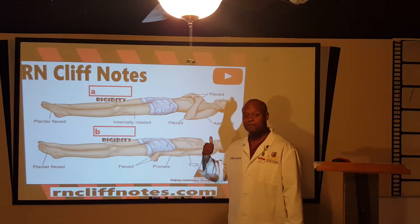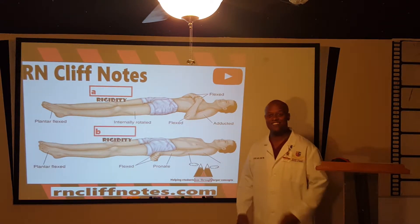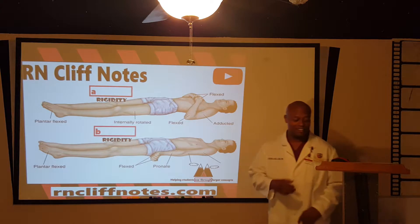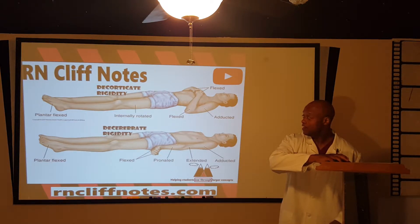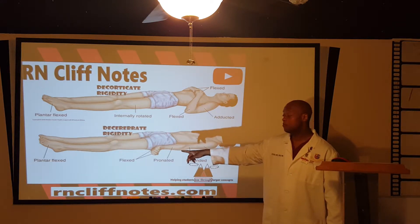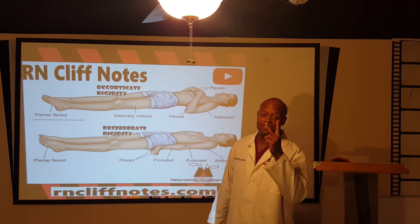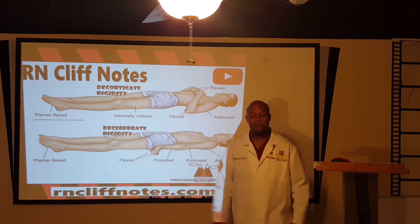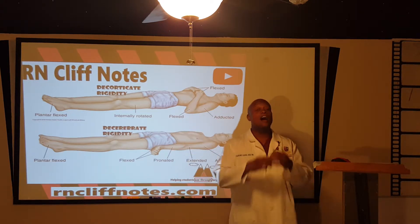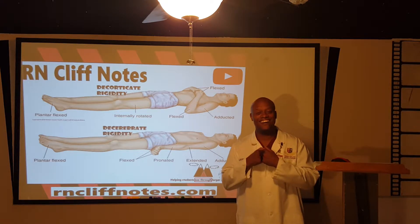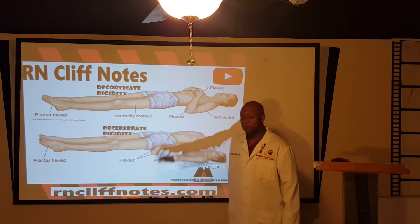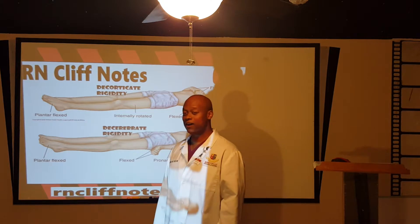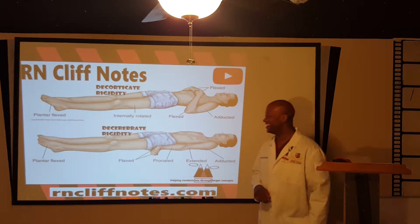Quiz time — name that rigidity. Pause the video if you need to. Decorticate would be A, and decerebrate would be B. Two ways to learn that: for decorticate, we think of 'court' — what position would you be in in court? 'Please your honor, I'll never do it again' — hands like that, flexed up. For decerebrate, what position would you be in when you graduate from school? Hands down at your side in cap and gown. The decerebrate and the decorticate.